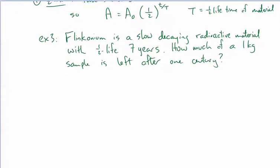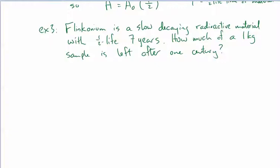I've made up a fictitious example of flanconium, which is a slow decaying radioactive material. The half-life of this material is seven years. What that means is that in seven years, half of whatever is there now will remain. The question is how much of a one kilogram sample would be left after a century?